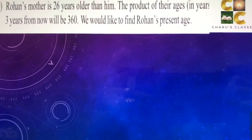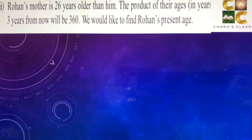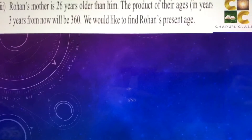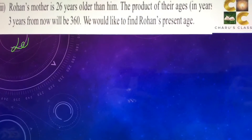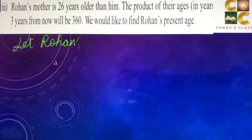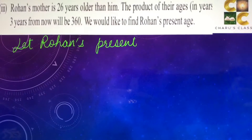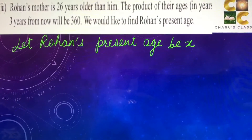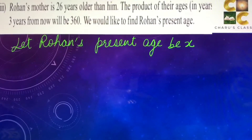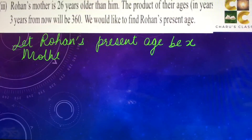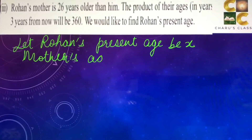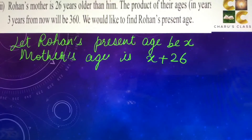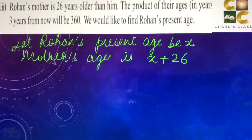Third question: Rohan's mother is 26 years older than him. The product of their ages three years from now will be 360. We would like to find Rohan's present age. So let Rohan's present age be x. Since his mother is 26 years older, mother's present age is x + 26.